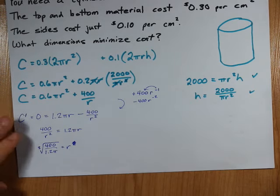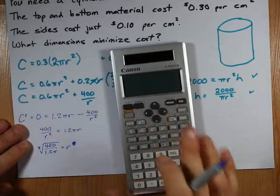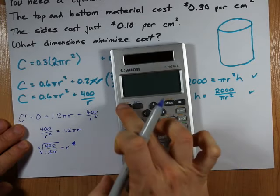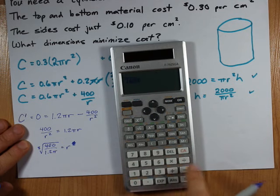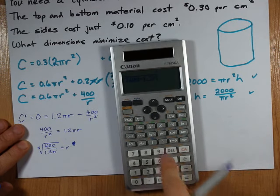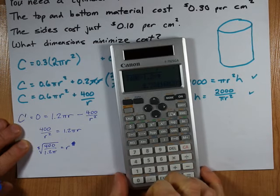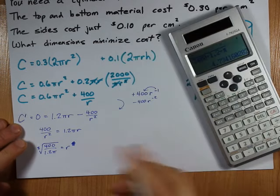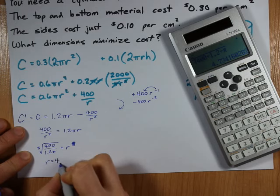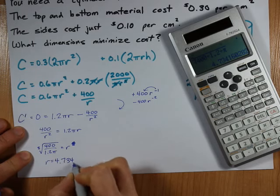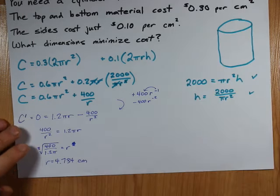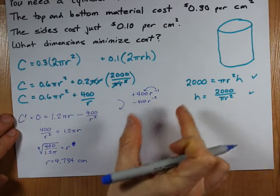Now this is a nice exact answer, but it's pretty ugly. So I'm just going to get the real answer on my own. I'm going to type cube root of 400 over 1.2 pi. And I end up with a radius of 4.734 centimeters. 4.734 centimeters will be the radius of the circle that makes the top and bottom. It's actually pretty small.